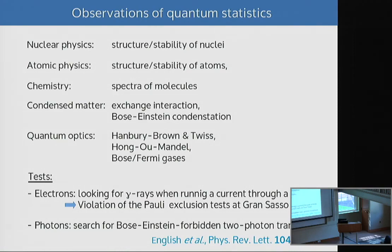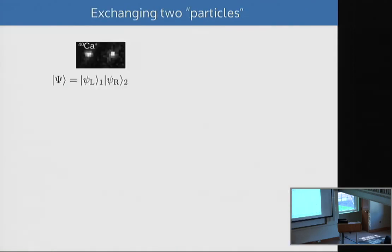There have been also a couple of dedicated tests I am aware of. One is to look for failure of the quantum statistics or the symmetrization principle for electrons. The idea is you run a current through metal, and if the electrons, the new electrons are not properly symmetrized, they could fall into the low state and you would get a gamma ray. Those tests have been done and everything holds as far as we know.